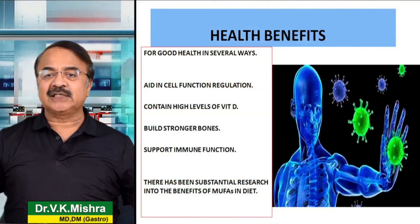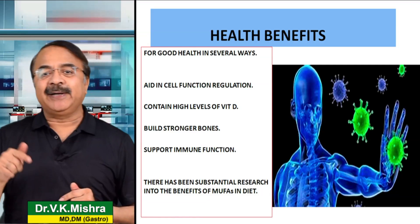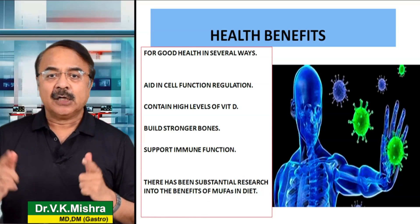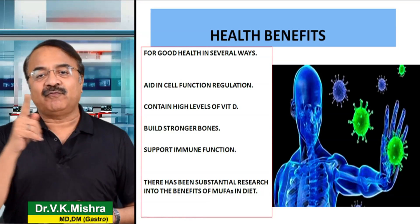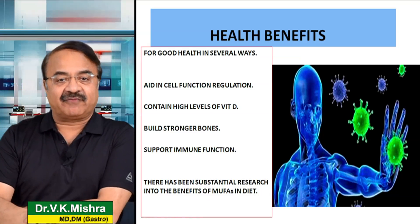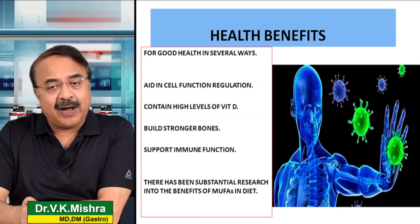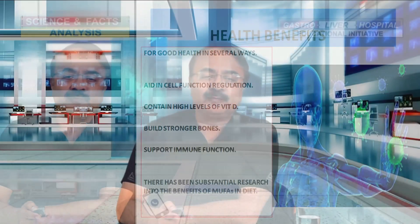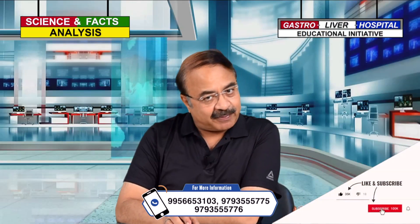हमारा जो immunity system है वो vitamin D माँगता है, and vitamin D के अलावा MUFA माँगता है. तो mono unsaturated fat with vitamin D आपकी immune system को ऊपर की तरफ रखते हैं. There is substantial research जिसने ये बोला कि आपकी जो body है, उसमें इस तरह के fats जिसमें mono unsaturated fat ज़्यादा है, उसका requirement बहुत help करता है.